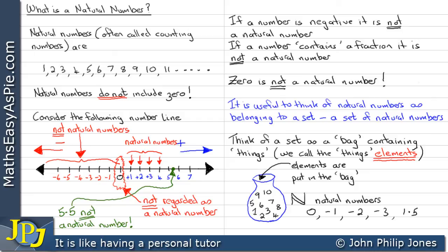Now all of these numbers I'm writing out here, zero, minus one, minus two, and so on, they are not natural numbers. Consequently, they are not allowed in the bag. They are not part of the set.